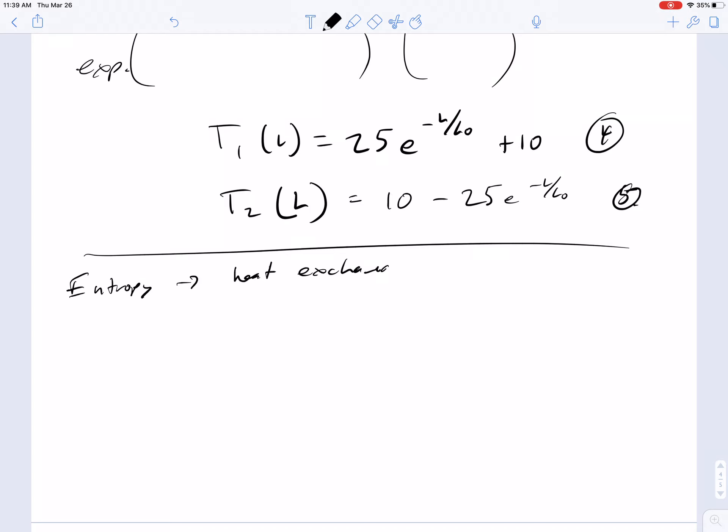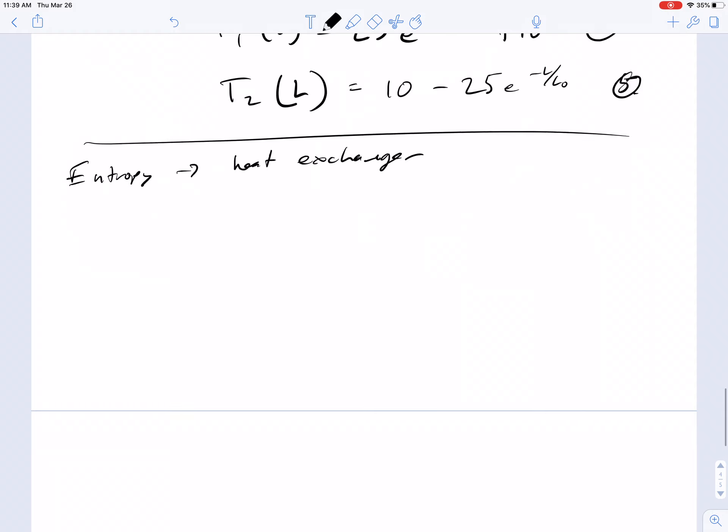And then we're going to circle back to the actual simpler case of the counter current heat exchanger. Similarly, we have entropy in the control volume at some time T plus delta T minus the entropy in the control volume at some previous time point T.